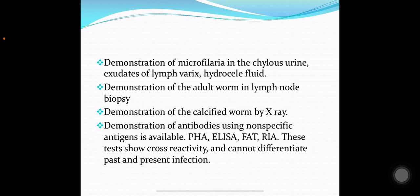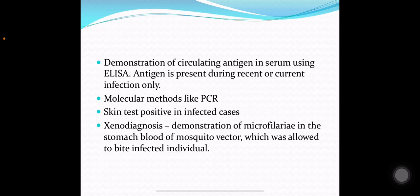Demonstration of antibodies using non-specific antigens is available via passive haemagglutination assay, ELISA, fluorescent antibody test, and radioimmunoassay. These tests show cross-reactivity and cannot differentiate between past and present infection. Demonstration of circulating antigens in the serum using ELISA can also be done; antigen is present only during current or recent infection. Molecular methods like PCR can be used, and skin tests are positive in infected cases. Demonstration of microfilaria in the stomach blood of the mosquito vector, allowed to bite an infected individual, is another method.